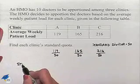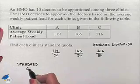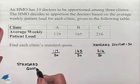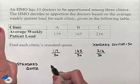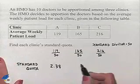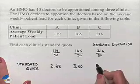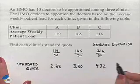Our standard quota for each will be rounded to the nearest hundredth. And so we're going to divide here. We end up with 2.38 for clinic A. We have 3.30 for clinic B and 4.32 for clinic C.